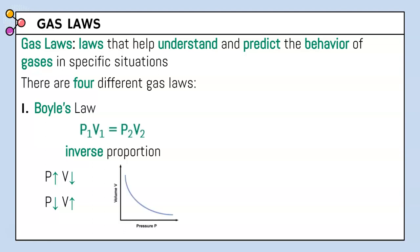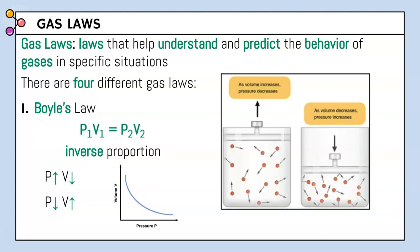An inverse proportion produces a curved graph when we plot data. Looking at an example: if we increase the volume of a container, there is more space for particles to move around, so we have fewer collisions and pressure decreases. If we decrease the volume, there's less room for particles, they collide more, and pressure increases.